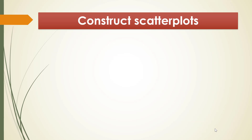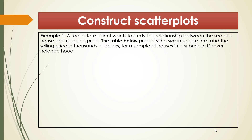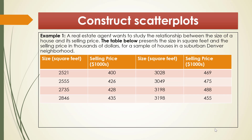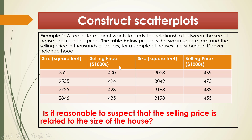So first, how to construct the scatter plots? Let's consider example 1. A real estate agent wants to study the relationship between the size of a house and its selling price. The table below presents the size in square feet and the selling price in thousands of dollars for a sample of houses in suburban Denver neighborhood. We have a sample of eight houses and their corresponding selling prices. The question is: is it reasonable to suspect that the selling price is related to the size of the house? And in order to do so, the first method is the scatter plot — this is called the visual method.